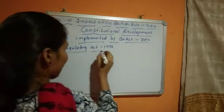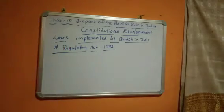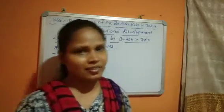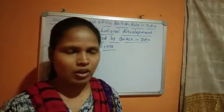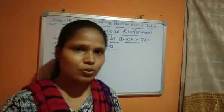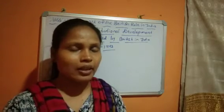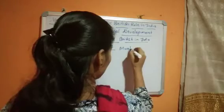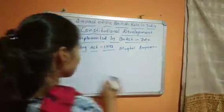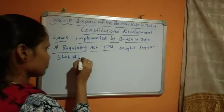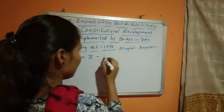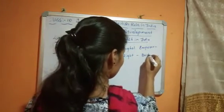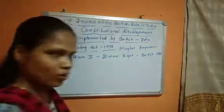First: the Regulating Act of 1773. After the implementation of Diwani Rights in 1765, the company officials misused the provision and became rich in a corrupt way. You know, Mughal Emperor Shah Alam II gave Diwani Rights to the British in 1765.